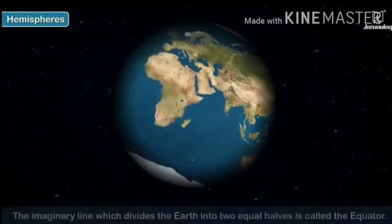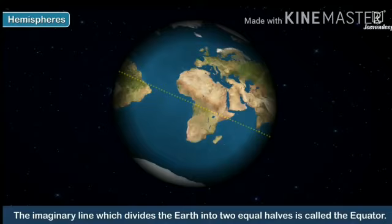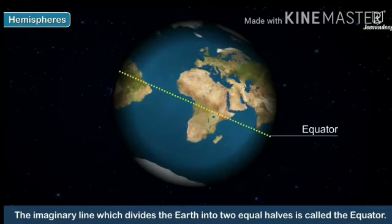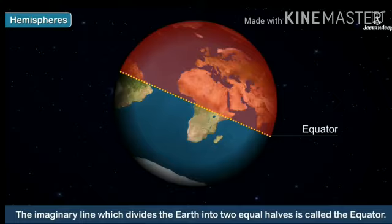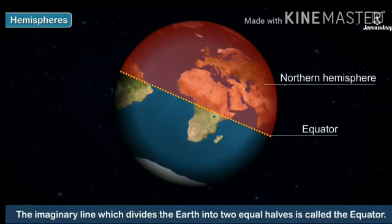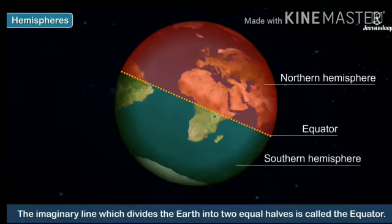Now let's study about the hemisphere. The imaginary line which divides the Earth into two equal halves is called the equator. The line passing through the center of the Earth is called the equator. The above part of the equator is called the Northern Hemisphere, and the below part of the equator is called the Southern Hemisphere.